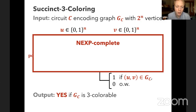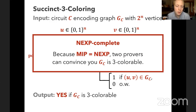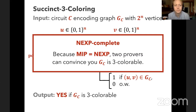Succinct three coloring is in NEXP — in fact, it's one of the canonical NEXP-complete problems. Because MIP equals NEXP, two all-powerful provers can convince you that graph G_C is three-colorable, even though this graph is exponentially large. A polynomial-time verifier doesn't have time to read the entire graph, but by interacting with two non-communicating provers, it can still become convinced.